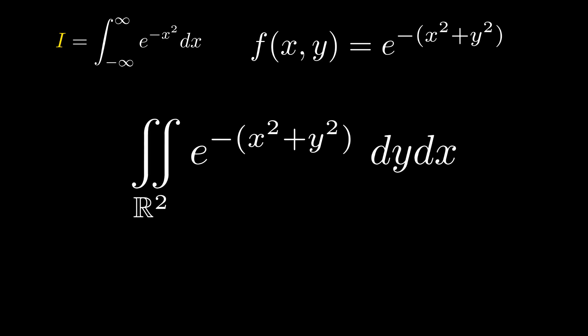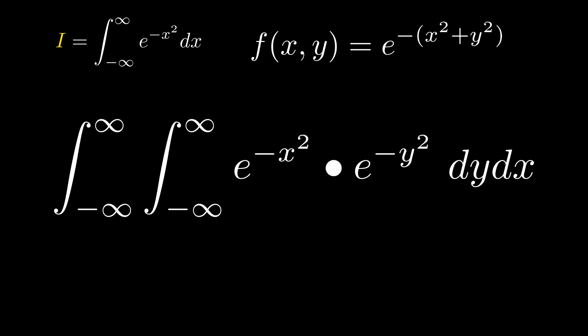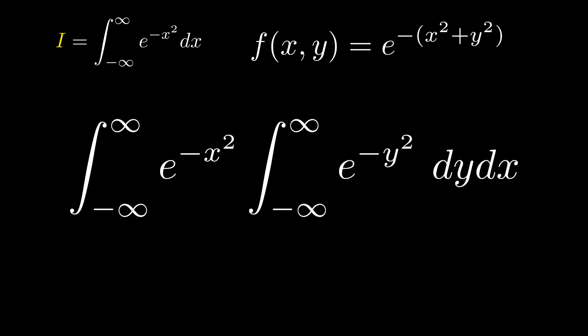If we simplify this, we get the integral from negative infinity to infinity of the integral from negative infinity to infinity of the three-dimensional function. By properties of exponents, we can split this into e to the negative x squared times e to the negative y squared. Since we are integrating over y, e to the negative x squared is a constant and can be pulled out.